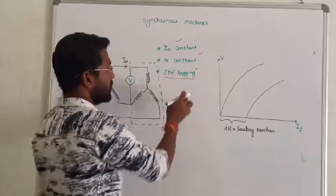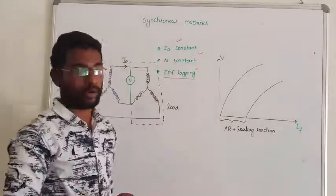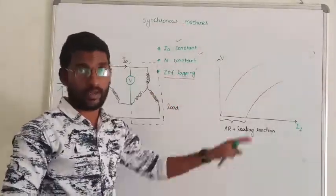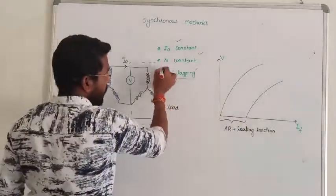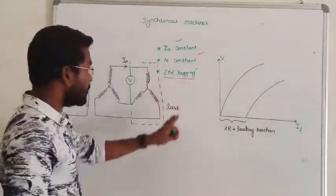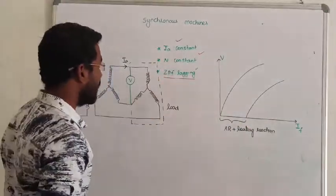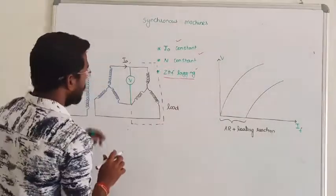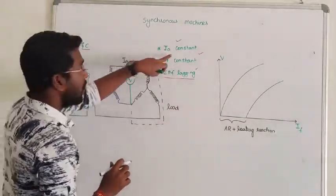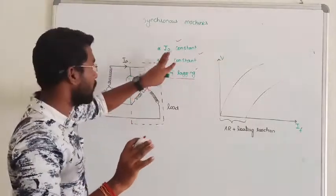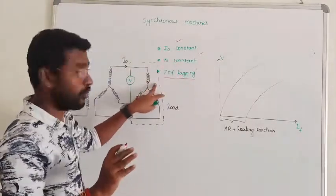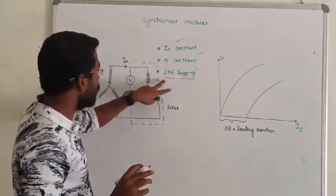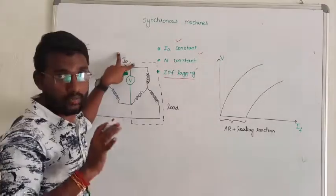We can see the load vary. First of all, we can maintain zero power factor lagging, and we can see the load vary, then we can change the power factor. I am considering zero power factor lagging. If we consider the machine in case of zero power factor lagging, the armature current is fixed. We can see the load vary, then we can see the voltage vary. The voltage and load parameters vary, but the armature current is fixed.